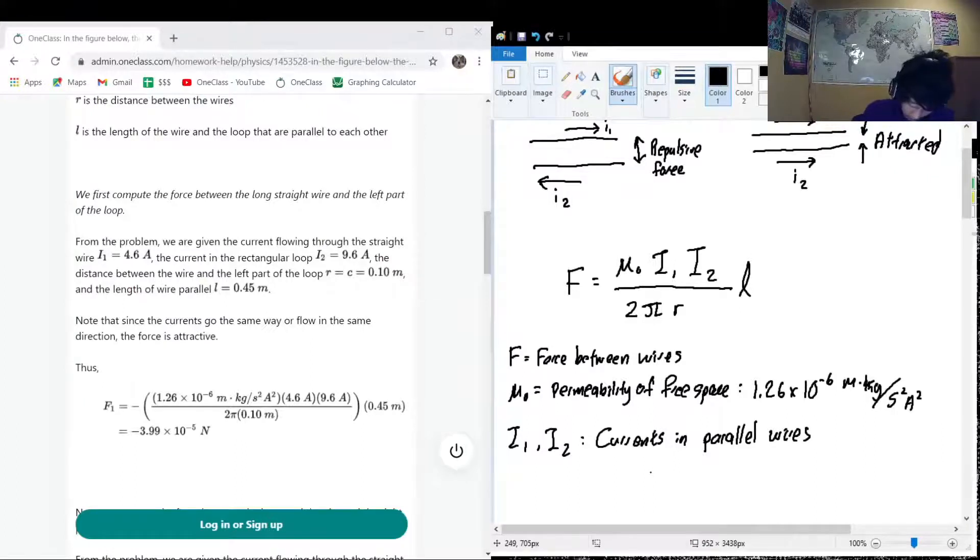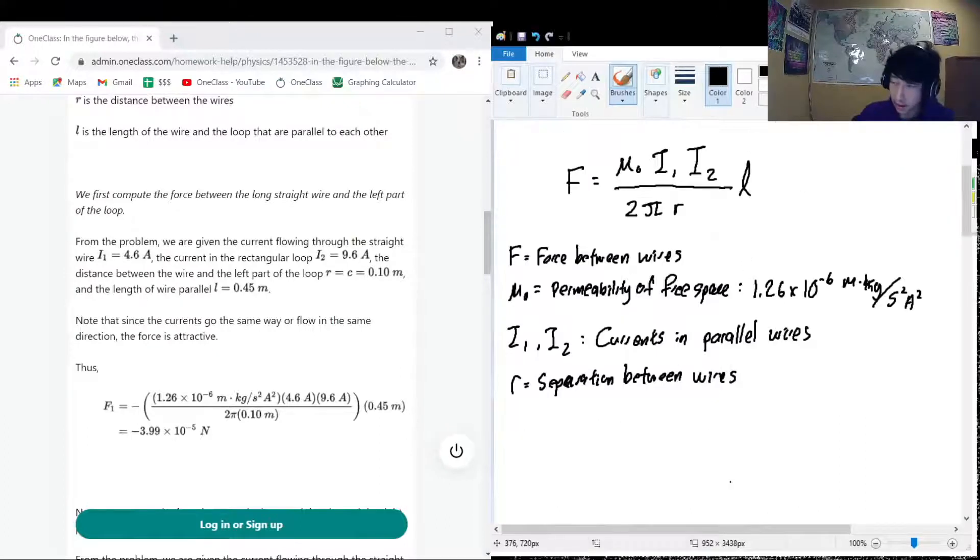r is going to be separation between wires, and l is the length of parallelness, the length of wires that is parallel.